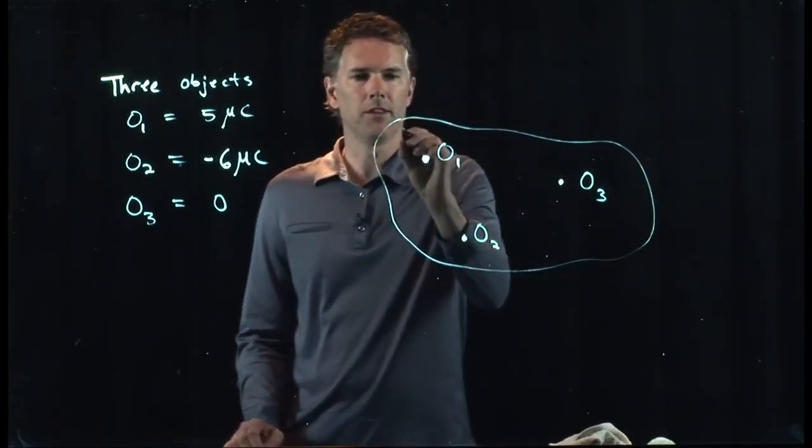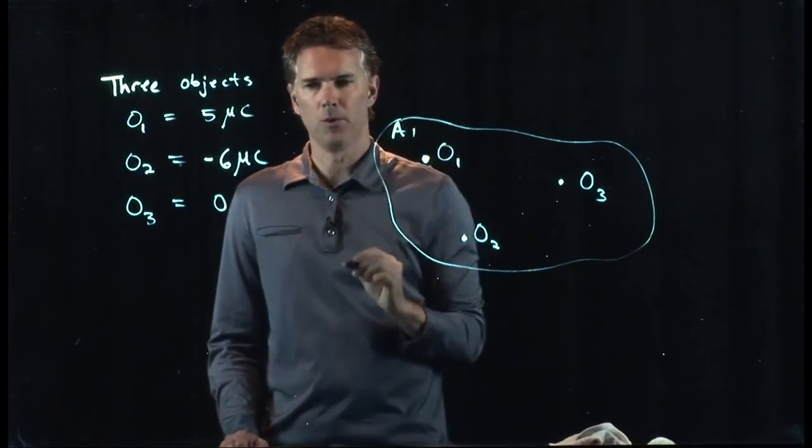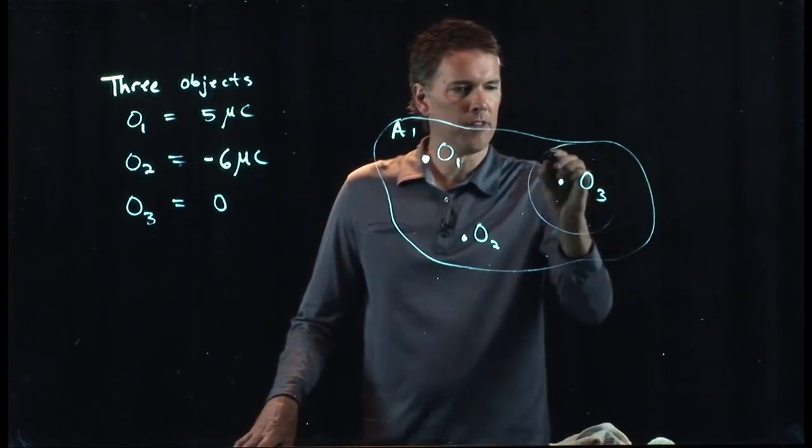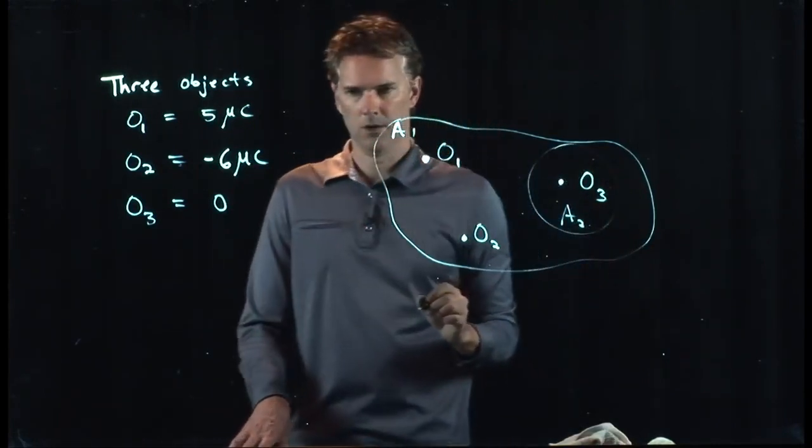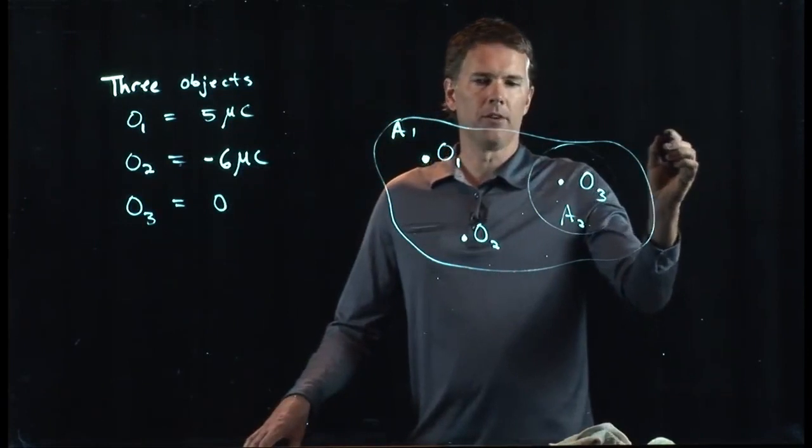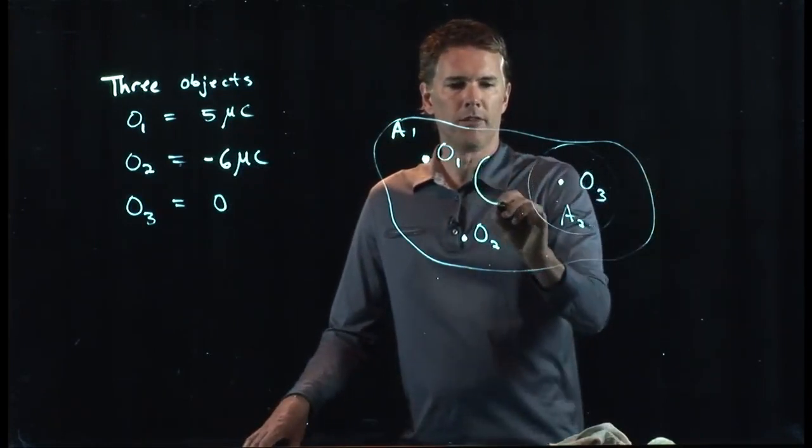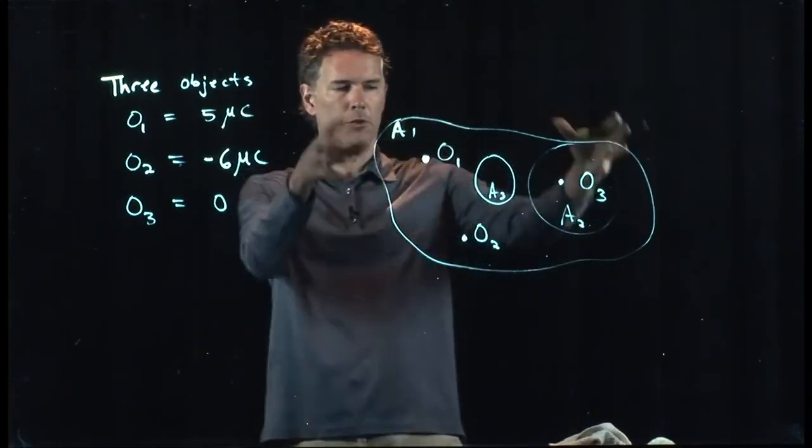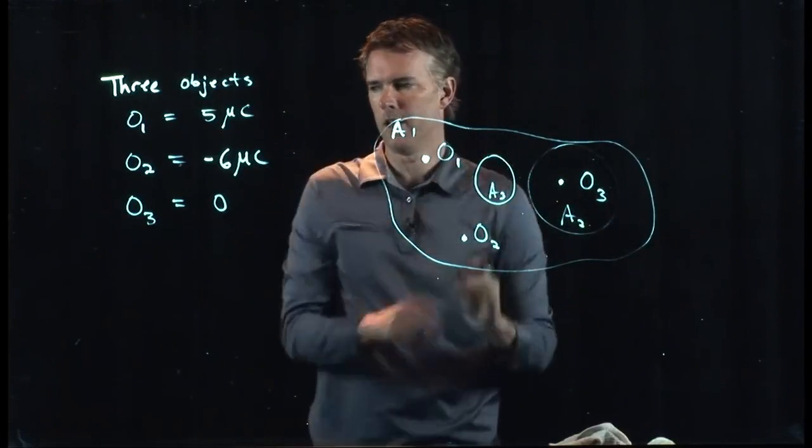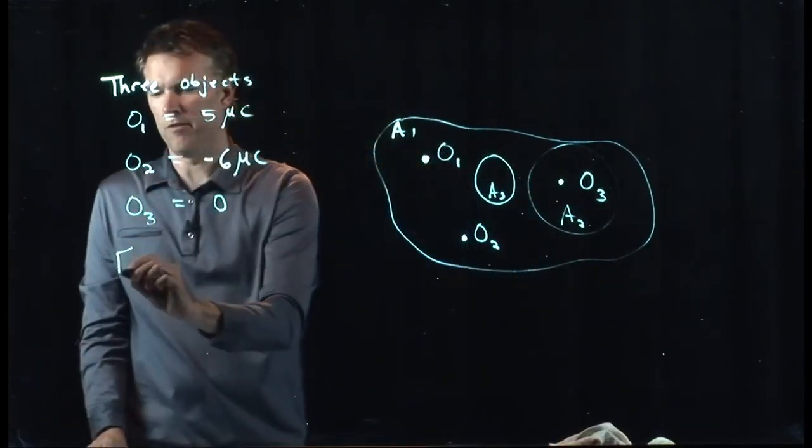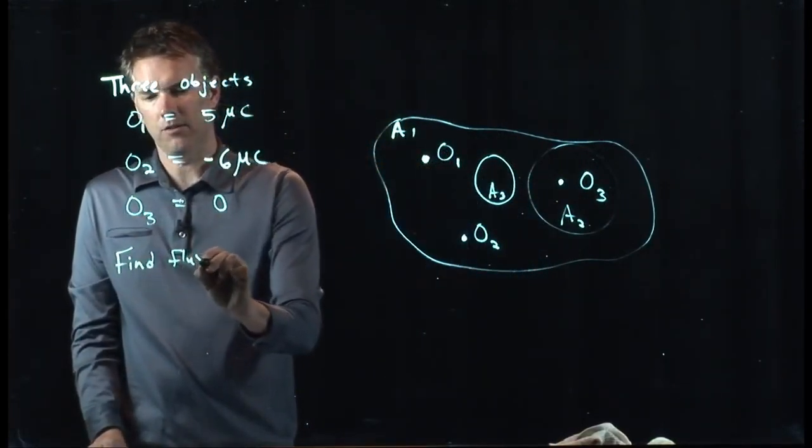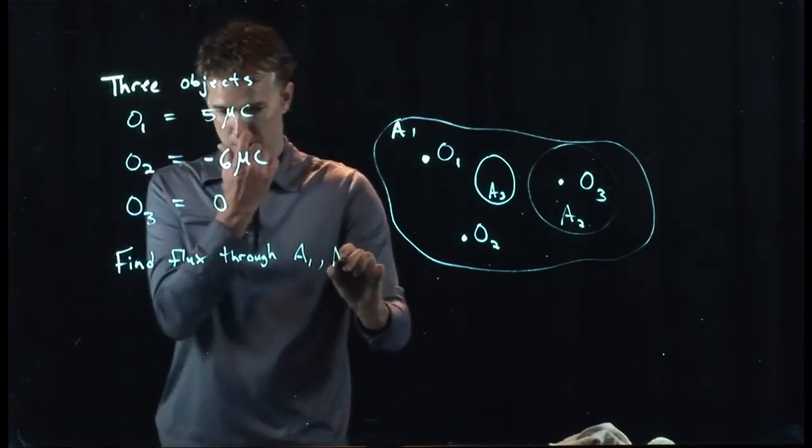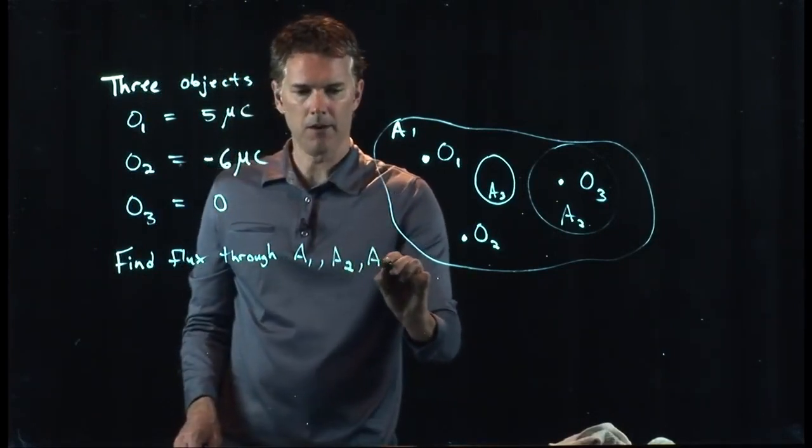Let's ask, what is the flux through area 1? What is the flux through area 2? And then let's ask a follow-up question, what is the flux through area 3? So we have a big sort of peanut. We have a sphere here for A2. We have a sphere here for A3. And we want to find the flux through area 1, area 2, and area 3.